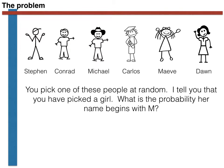Pause the video for a moment and take some time to think about the answer to the question. Hopefully you were able to work out that the answer is one half. Pause the video again and try to work out the set of steps that you took in obtaining this number.